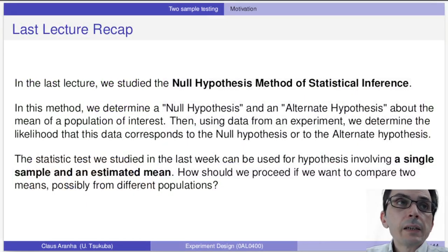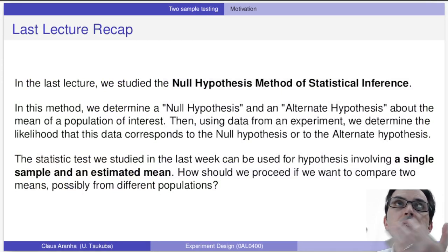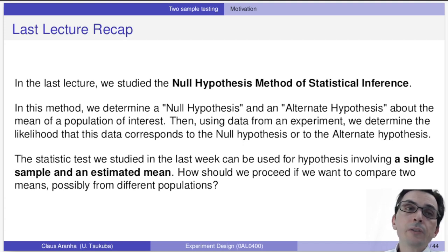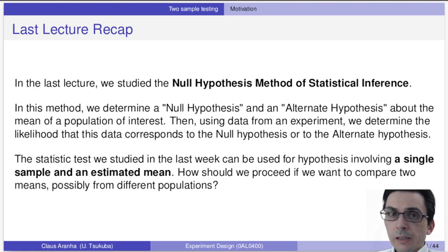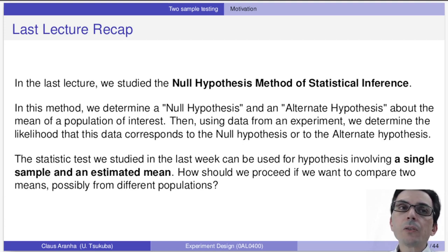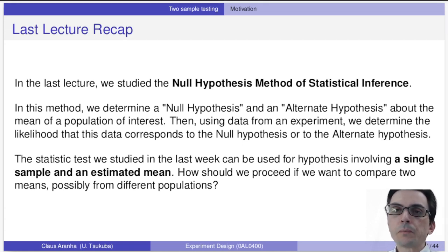In the last lecture we studied the null hypothesis method of statistical inference. In this method we determine two hypotheses — a null hypothesis and an alternate hypothesis — which describe different ways to see the population of interest. Using data from an experiment, we determined the likelihood that this data corresponds to either the null hypothesis or to the alternate hypothesis. That's a very powerful and useful statistic, but as we described in the last class, we can only perform it to compare a single sample and an estimated mean. However, how should we proceed if we want to compare two samples from possibly different populations?